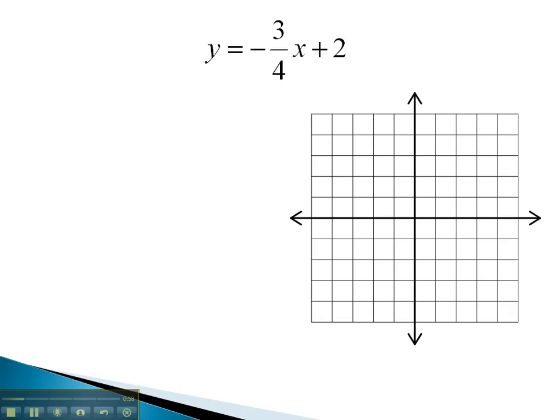In this equation, y equals negative 3 fourths x plus 2, we remember that slope-intercept form is y equals mx plus b. From this, we can quickly identify that m, the slope, is negative 3 fourths, and b, the y-intercept, is 2.